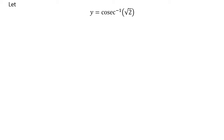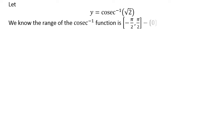Let us assume y is equal to inverse of cosecant of square root of 2. We know the range of the inverse cosecant function is the closed interval of minus half of pi and half of pi, except 0. So the above statement implies the value of y lies in the closed interval of minus half of pi and half of pi, except 0.